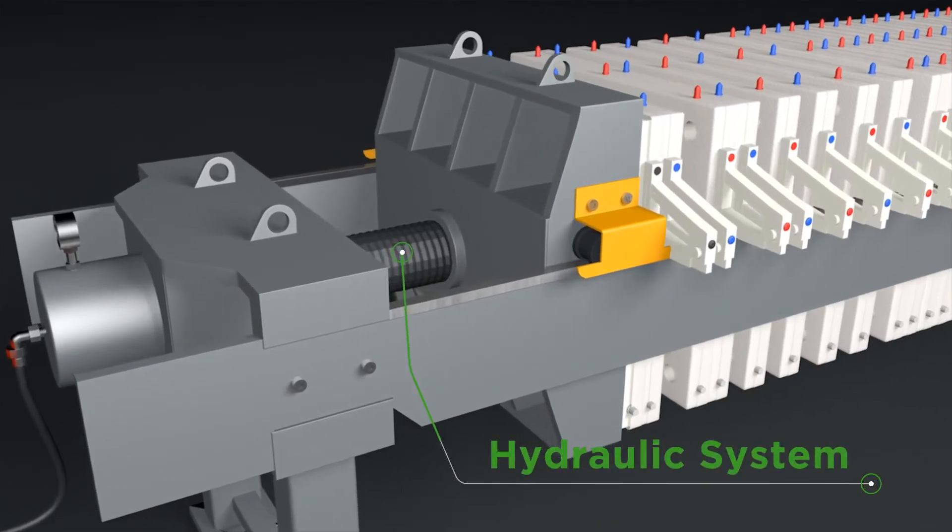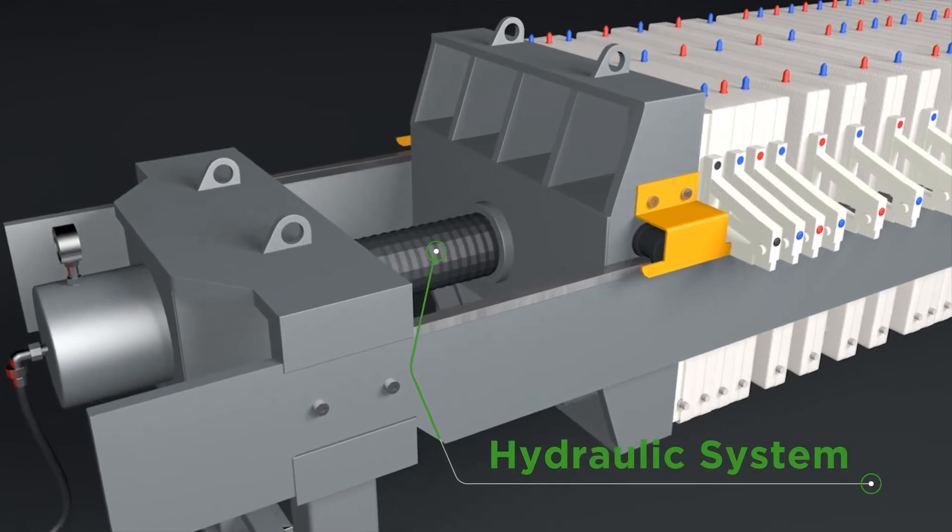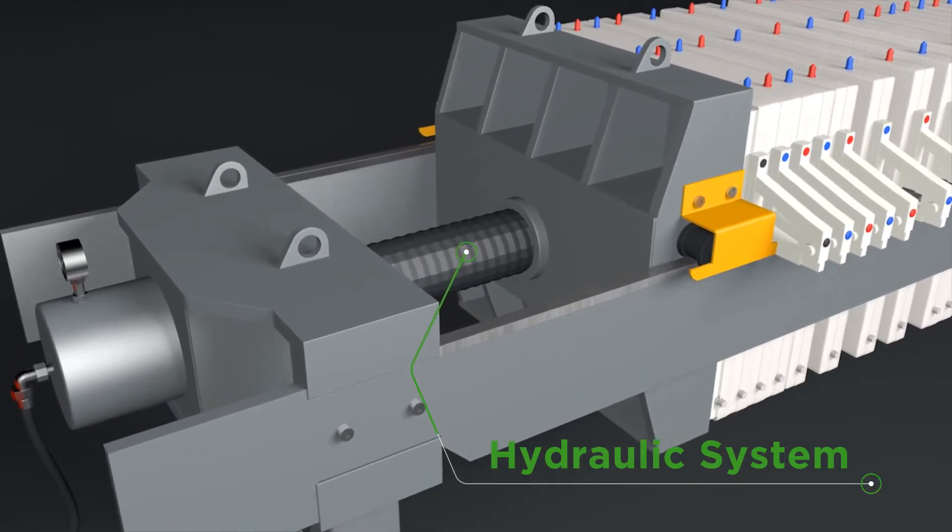The hydraulic system applies hydraulic pressure on the filter plates by hydraulic cylinder through the moving plate and holds the pressure.